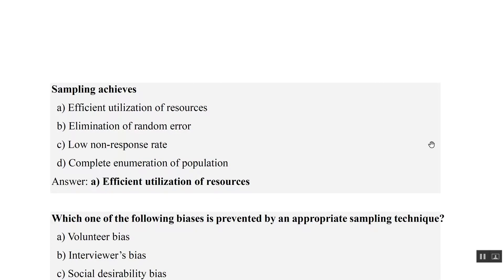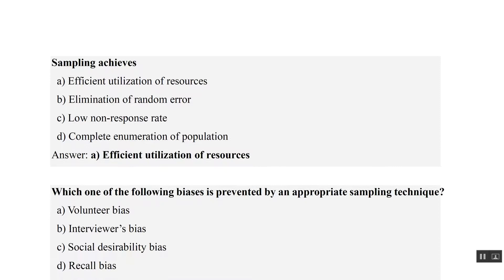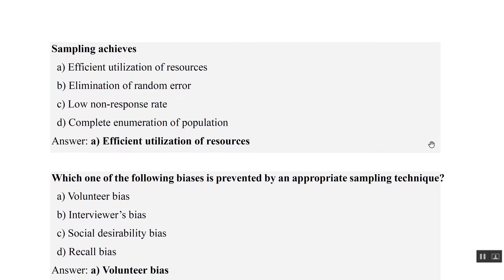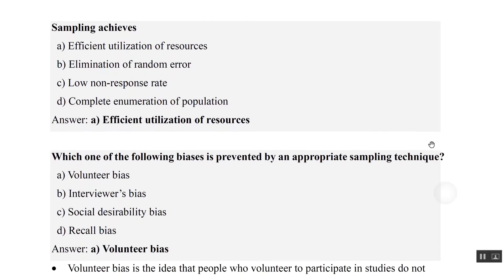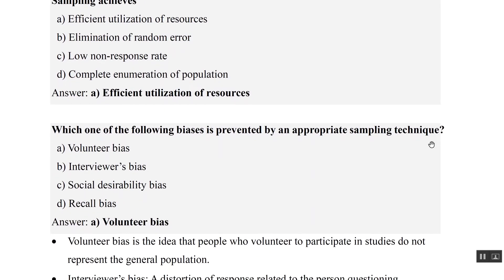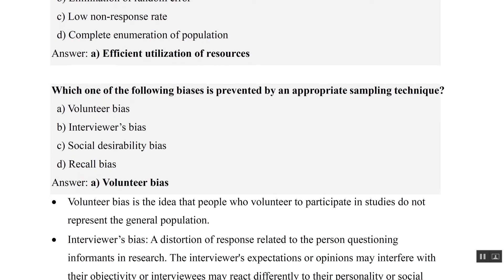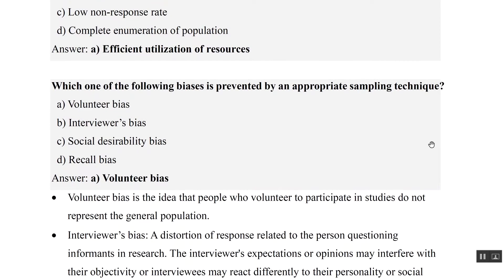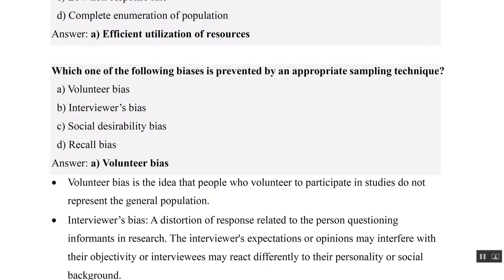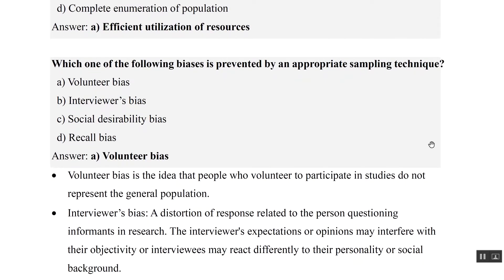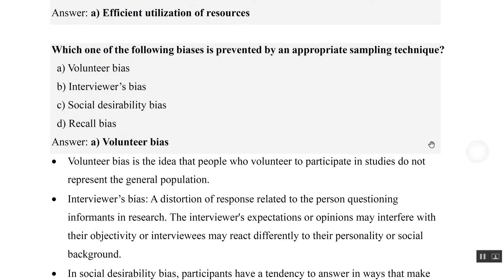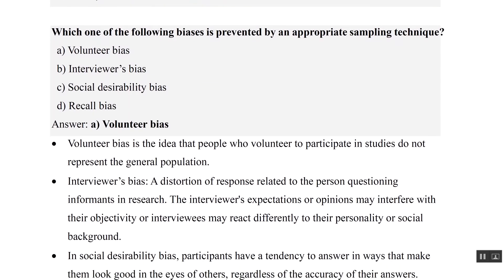Which of the following biases is prevented by appropriate sampling technique? Sampling basically selects the participants or volunteers, so if you have an appropriate sampling technique, then voluntary bias will be removed. So option A is the answer.